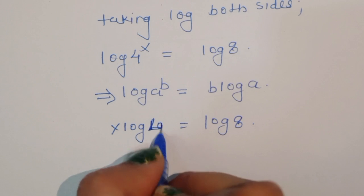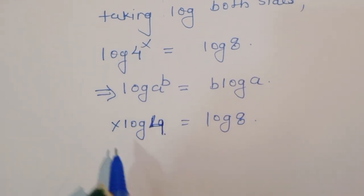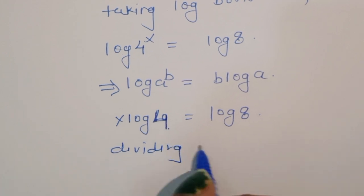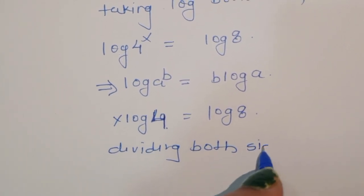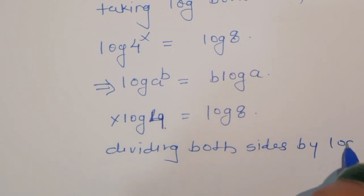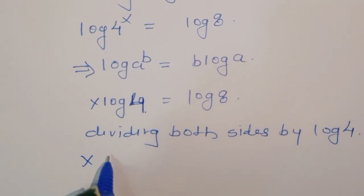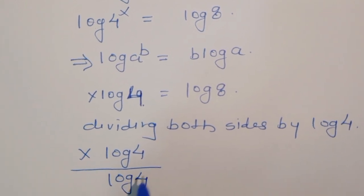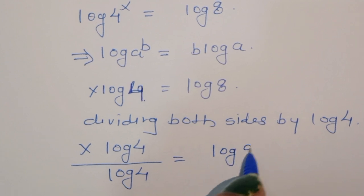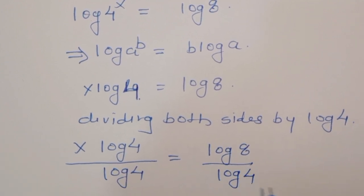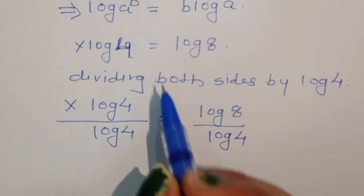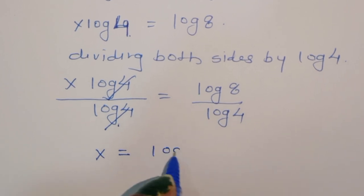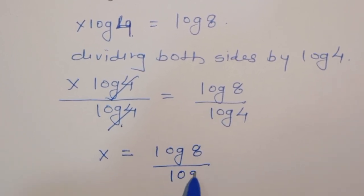Now, dividing both sides by log 4, we get x times log of 4 divided by log of 4 is equal to log of 8 divided by log of 4. The log 4 on the left cancels, giving us x is equal to log of 8 divided by log of 4.